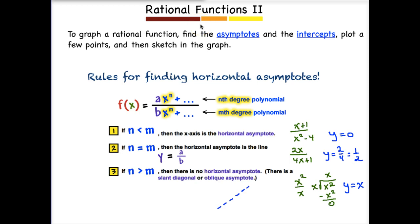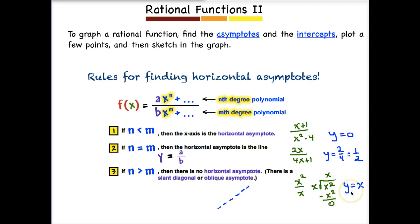In our third example, we're top-heavy — the exponent in the numerator is greater than the exponent in the denominator. When that happens, you need to divide the complete polynomials. So we would take X squared divided by X — X goes into X squared X times, we subtract X squared, and we have a remainder of 0. Many times you'll have a non-zero remainder, but it's too small to make a difference. So our oblique asymptote will be Y equals X, which has a Y-intercept of 0 and a slope of up 1 over 1. You would graph that just as you would any linear function.